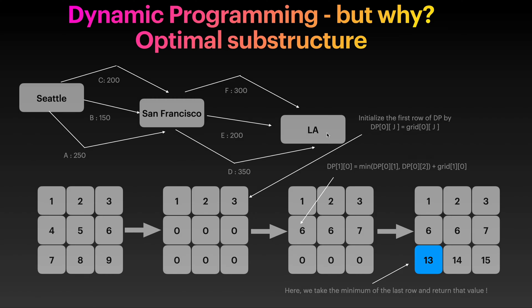If I give you this problem where you have to find the shortest path from Seattle to LA and you have to pass through San Francisco, well from Seattle to San Francisco you would take path B, and then from San Francisco to LA you would take path E.